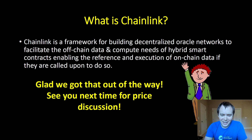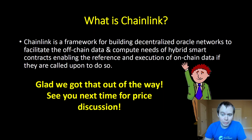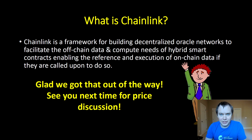Clearly I'm kidding, but let me repeat this again because we have a lot to unpack here. Chainlink is a framework for building decentralized oracle networks to facilitate the off-chain data and compute needs of hybrid smart contracts, enabling the reference and execution of on-chain data if they are called upon to do so. Pause the video and look at that sentence — we're going to unpack all of this as we go.